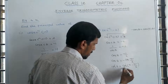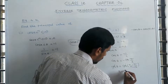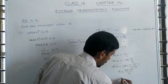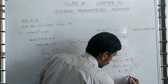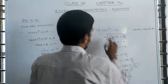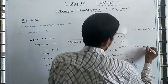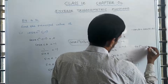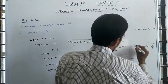Cos and cos cancel. Taking LCM: b equals 3π minus π divided by 3, which gives b equals 2π/3. Therefore, secant inverse of minus 2 equals 2π/3. That is the answer.